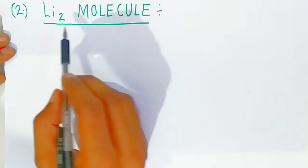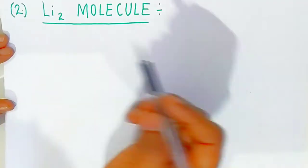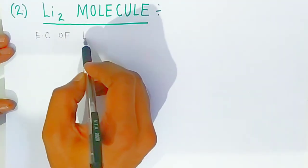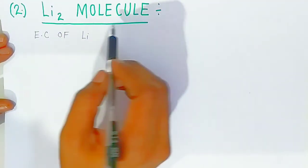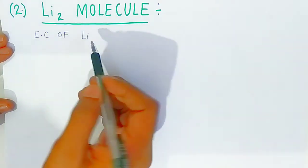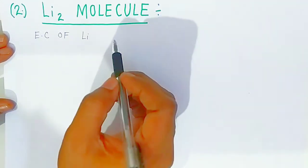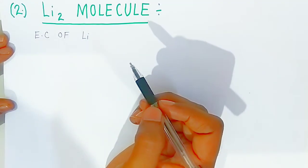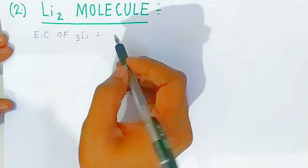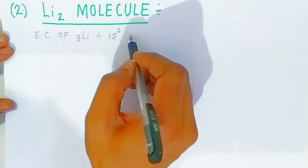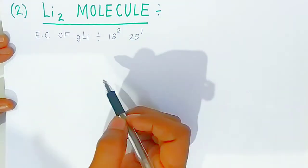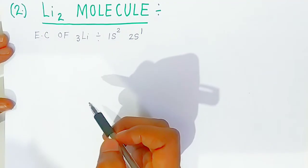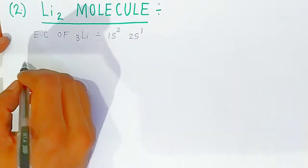Next, we are going to draw the molecular orbital diagram of lithium molecule (Li₂). To write the electronic configuration of the lithium molecule, you must first know the electronic configuration of the lithium atom. The atomic number of lithium is 3, and its electronic configuration is 1s² 2s¹. Without this, it is very difficult to draw the molecular orbital diagram.